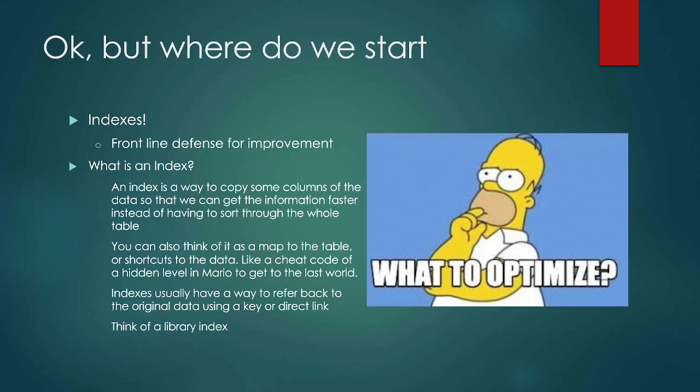If you've ever played some of the early Mario games, you might remember they have a hidden level — and if you beat the hidden level you actually get to skip ahead to world eight. Indexes will usually have a way to refer back to the original data, so a direct link or direct path. The next example I'm going to use is actually a library card index. I fully understand you may have never seen one of these, but it's actually a really good example.